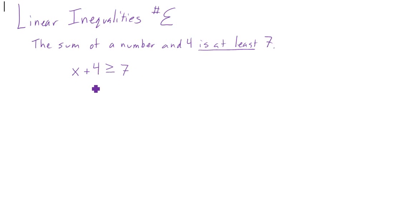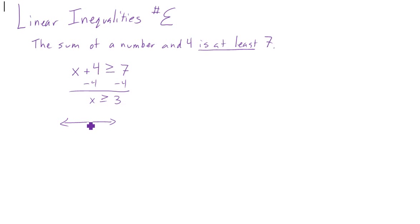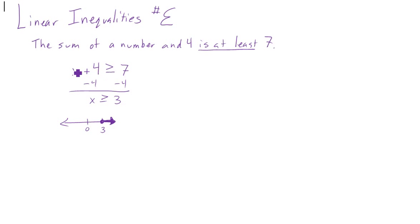From there we just need to solve it. Let's subtract the four, and we get x is greater than or equal to seven minus four, which is three. We're going to do our number line because that's what we should do as good algebra students. We put a dot at three — the dot shows it's equal to — and then an arrow to show x can be anything greater. You can put any number bigger than three in for x and it will work.